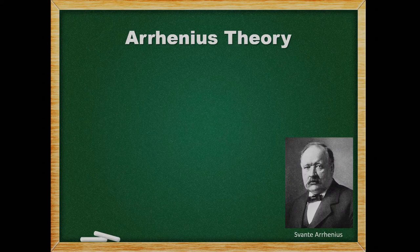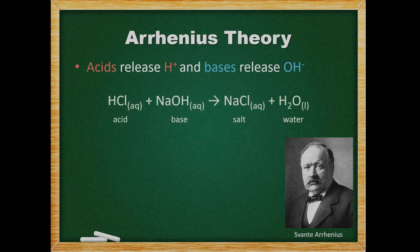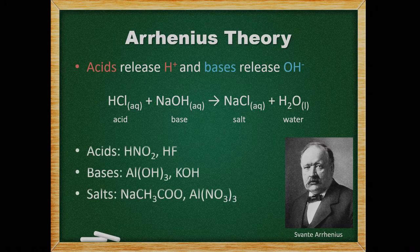How do we identify acids and bases? According to the Arrhenius theory, acids release hydrogen ions in solution and bases release hydroxide ions. A salt and water are generally what are formed when an Arrhenius acid and base react together. A salt is an ionic compound that doesn't contain hydrogen ions or hydroxide.